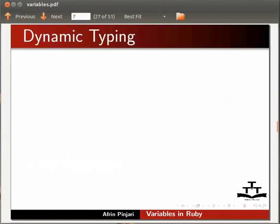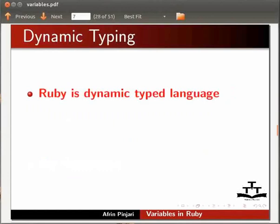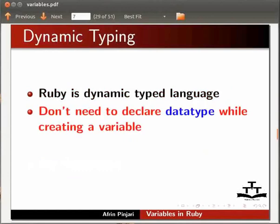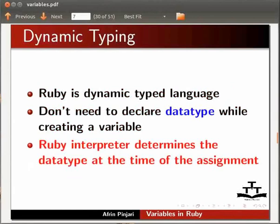Now, let us see what is dynamic typing. Ruby is a dynamic typed language. It means that you don't need to declare data type while creating a variable. Ruby interpreter determines the data type at the time of assignment.